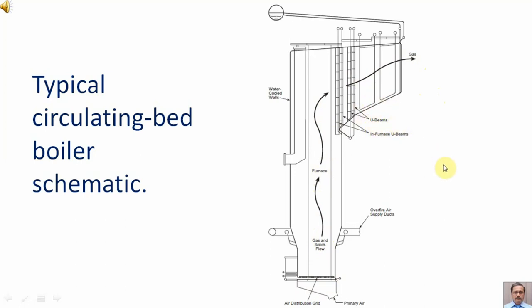Gas and solid flow is striking the U-beams. Gas is going forward but the solid fuel, because of the U-beams, is coming again down to the furnace. So that internal recirculation of the fuel is taking place.